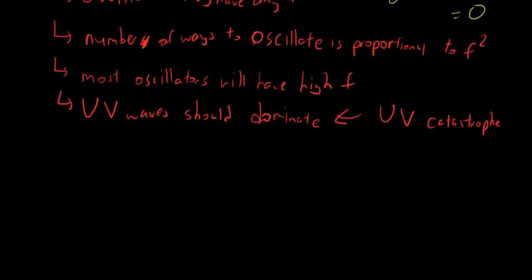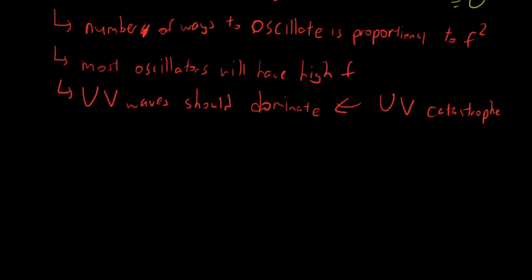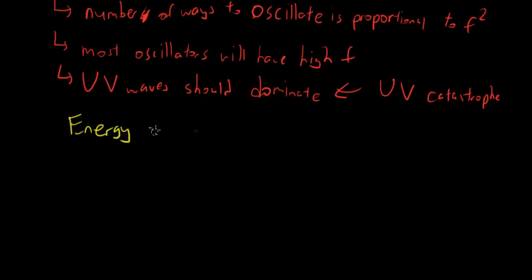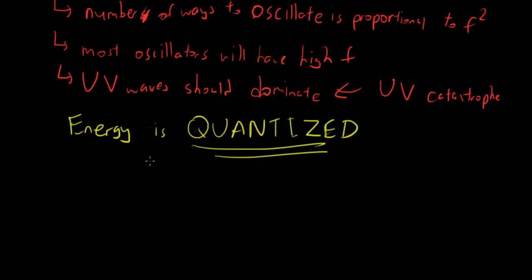Max Planck thought about this and came up with another explanation, and this next part solves the ultraviolet catastrophe. He modified his assumptions and said that energy — and this is basically quantum mechanics — energy is quantized. Energy is quantized, meaning that energy occurs in discrete amounts.